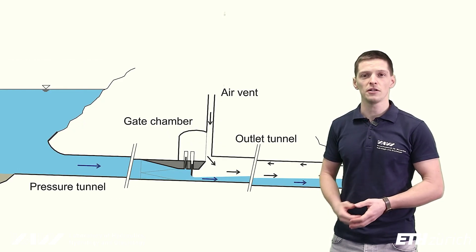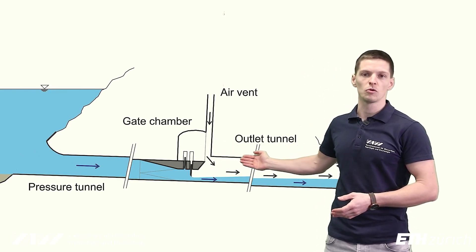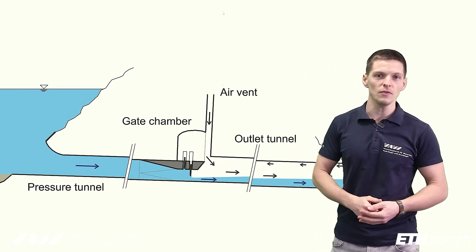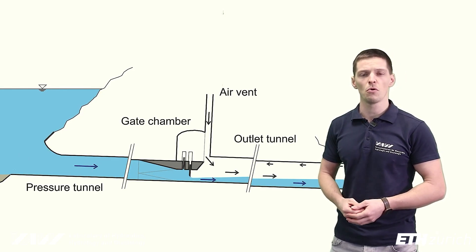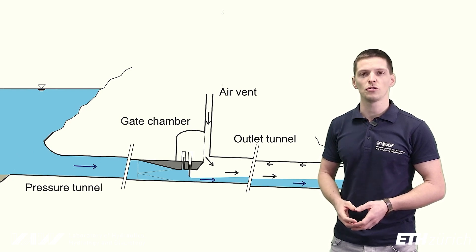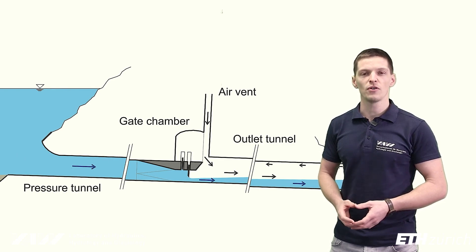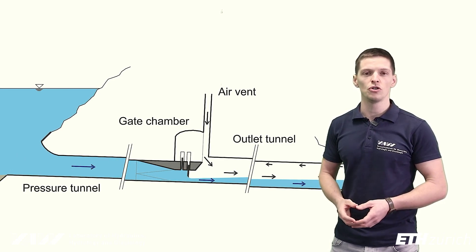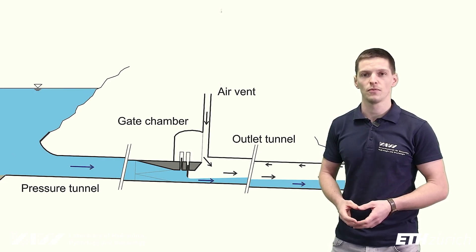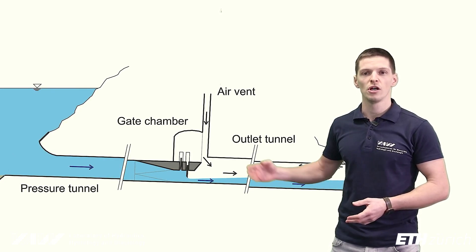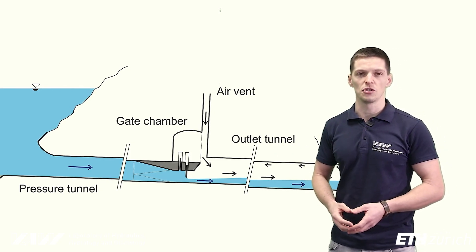A low-level outlet consists of a pressurized part connected to the gate chamber and followed by an outlet tunnel. At the gate, the flow transitions from pressurized to free surface flow, creating a high-velocity water jet with up to 40 meters per second for large dams. This high-velocity water jet may lead to issues related to flow-induced vibrations or cavitation damage. In addition, the water jet transports a lot of air out of the tunnel, which may further aggravate the situation.